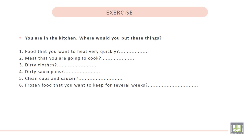Exercise. You are in the kitchen. Where would you put these things? One: Food that you want to heat very quickly. So I can use the microwave. Two: Meat that you are going to cook. In this case I can put it in the oven. Three: Dirty clothes. I use the washing machine.